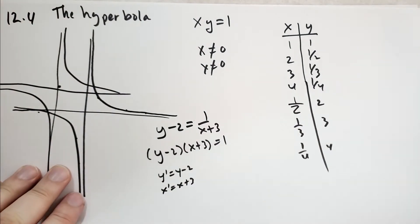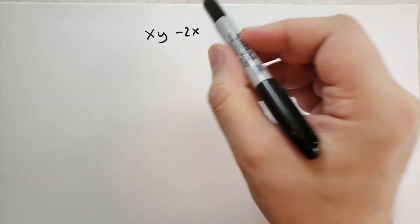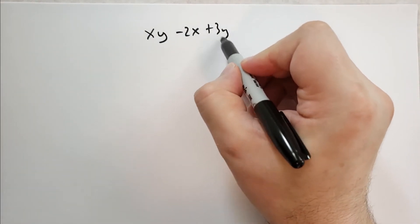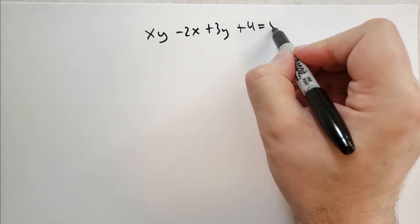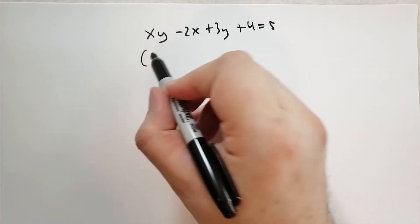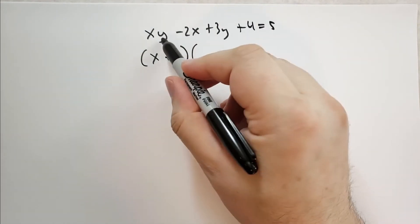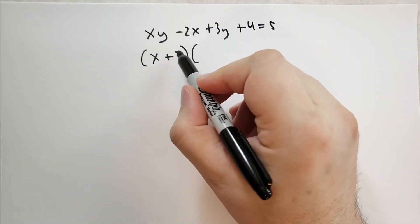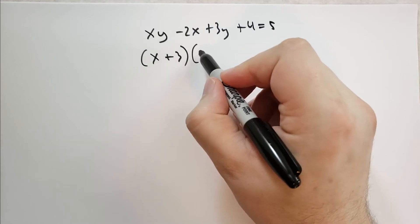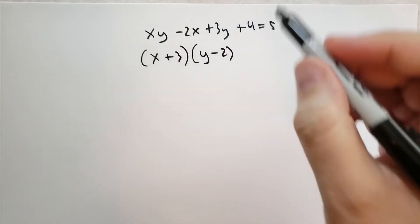This hyperbola appears in slightly more complicated formulas. So if we get xy minus 2x plus 3y plus 4 is equal to 5, how do we solve that? Well, we say there's an x and there's a 3, so we have x plus 3. And then we have a y over here, and the 3 is going to multiply by the y, so y minus 2, because the 2 has to multiply by the x, so that's that term there.